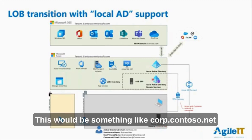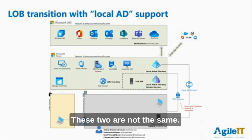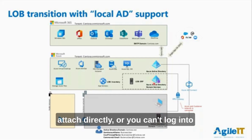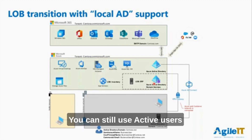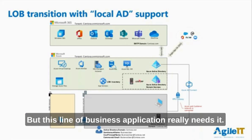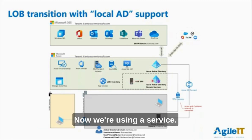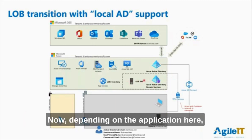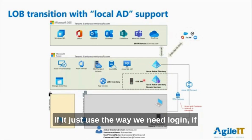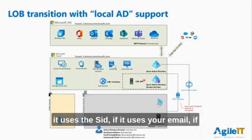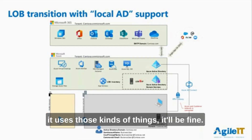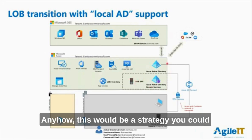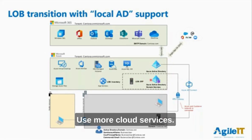What isn't the same is the domain name - here it's contoso.net, and here it would be something like corp.contoso.net. These two are not the same, and there are limitations: you can't extend the schema, you can't attach directly or log into the domain controllers to endpoints, though you can still use Active Directory Users and Computers. They are different, but this line of business application really needs it, so we can connect it to this service. Later, if I get rid of local Active Directory, these two are still connected. This would be a strategy to further disconnect local Active Directory and use more cloud services.